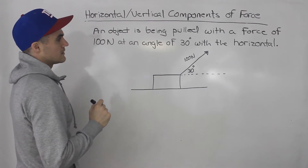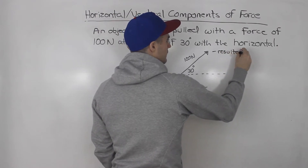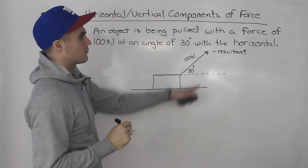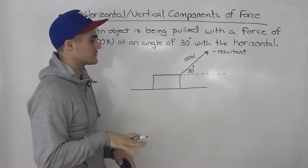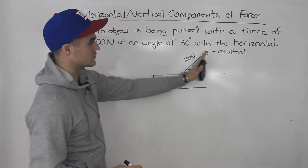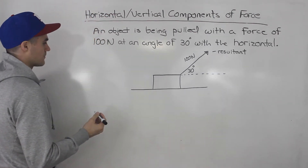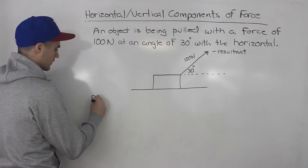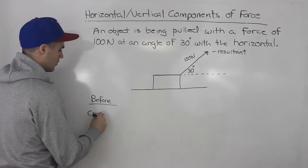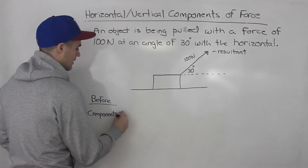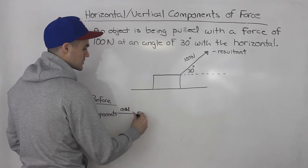Notice that here we are given the resultant. What we can do is we can break down this resultant vector of 100 newtons into components — more specifically, into horizontal and vertical components. So it's kind of like going backwards from what we were doing before. Because up to this point, what's been happening is we've been getting components and then adding all of the component vectors to get the resultants.